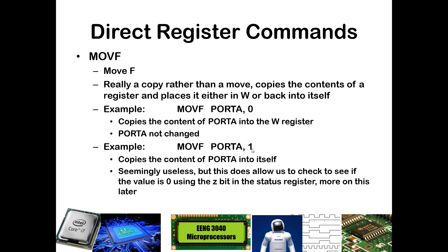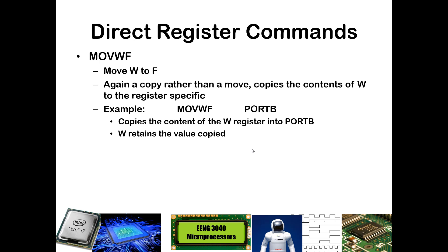MOVF port A comma 1 would take the value in port A and copy it back into itself. The main benefit there being that it would affect the status register and allow you to check to see if that value was equal to 0. MOVWF takes what's in W and moves it over to a particular register, and again this is just a copy because the value in W is not changed.